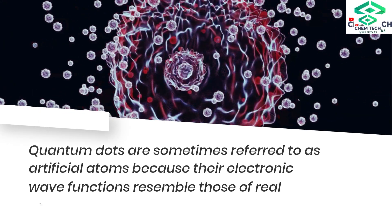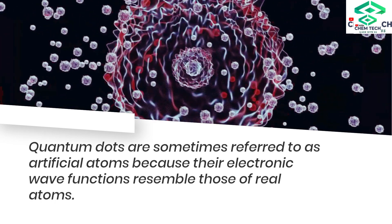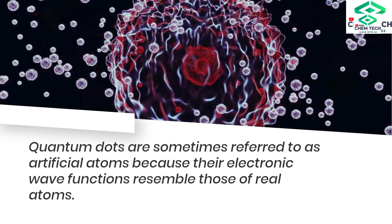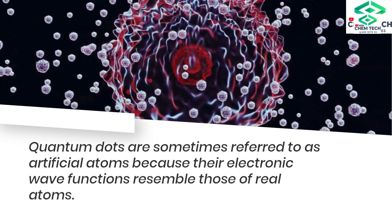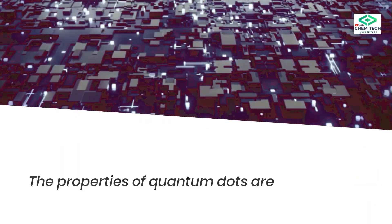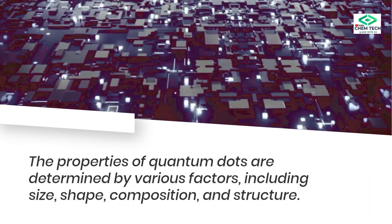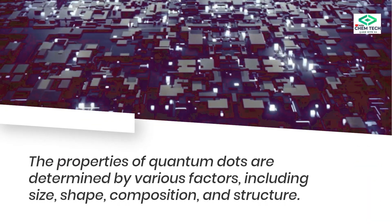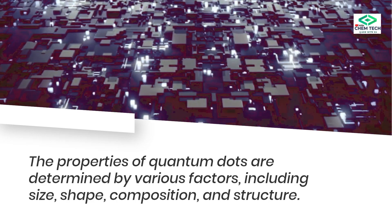Quantum dots are sometimes referred to as artificial atoms because their electronic wave functions resemble those of real atoms. The properties of quantum dots are determined by various factors, including size, shape, composition, and structure.